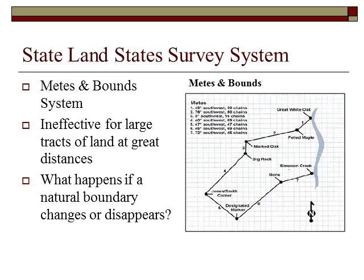The Metes and Bounds System was a very organic system. Just as you might imagine if you were going to lay out an area of land based on the topography, the geography, and the visible landmarks you can see. In our sample, we have a piece of land bordered by a creek or a river, a felled maple, a marked oak, a big rock, the neighbor's land, and a marker put there to designate a corner. You can see how it was very haphazard over a large area of land.